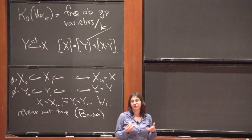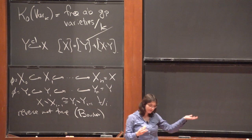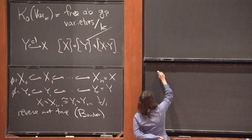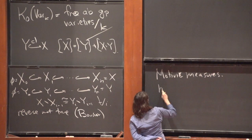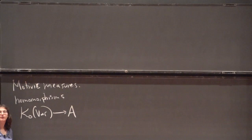We'd still like to be able to say that two varieties are not equal in the Grothendieck ring — to somehow say this ring keeps track of some geometric information. The way you can do this is by the usual method of mapping out of things to try to learn about them. The standard thing to do with the Grothendieck ring of varieties is to map out of it. These are called motivic measures — homomorphisms out of the Grothendieck ring into some abelian group A.